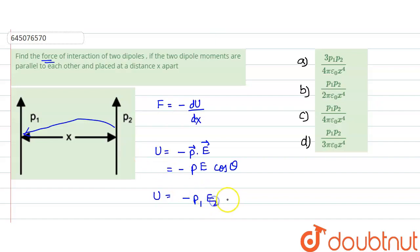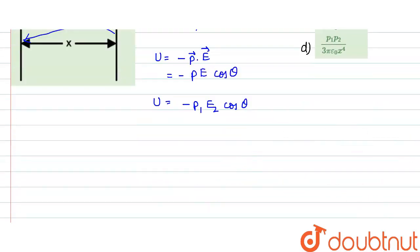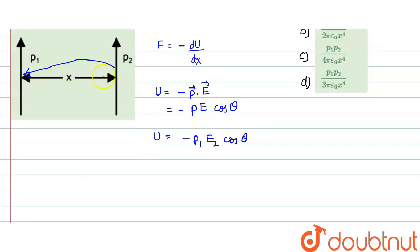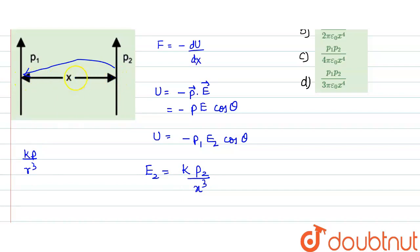The electric field due to this dipole at a distance x: the formula gives E = kp/r³. So the electric field due to dipole p2 at a distance x would be E2 = kp2/x³.